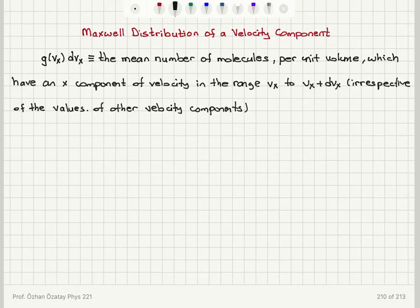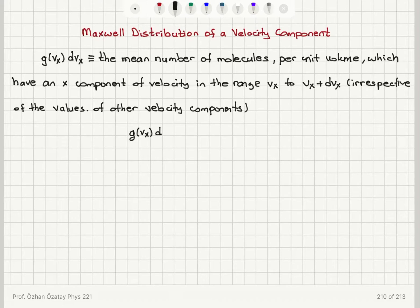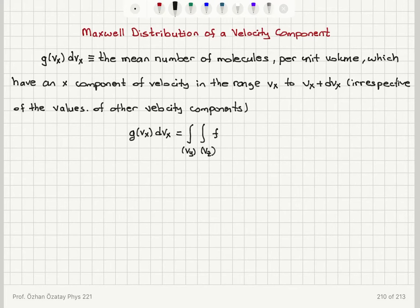This is the distribution function we are after, and we can obtain it by looking at the Maxwell velocity distribution. The distribution function for the x component of the velocity, g(vx)dvx, will be the integral over all possible y components and all possible z components of the Maxwell velocity distribution d³v.